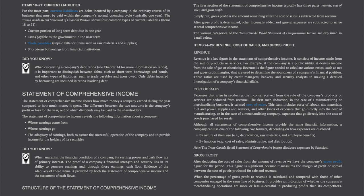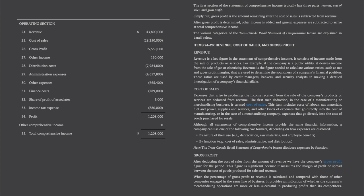Structure of the Statement of Comprehensive Income. The first section typically has three parts: revenue, cost of sales, and gross profit. Gross profit is the amount remaining after the cost of sales is subtracted from revenue. After gross profit is determined, other income is added and general expenses are subtracted to arrive at total comprehensive income. Revenue is a key figure in the Statement of Comprehensive Income, consisting of income made from the sale of products or services. Revenue is the figure needed to calculate various ratios such as net and gross profit margins that are used to determine the soundness of a company's financial position. These ratios are used by credit managers, bankers, and security analysts in making a detailed investigation of a company's financial affairs.